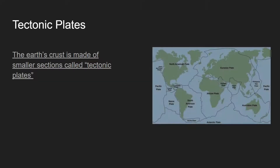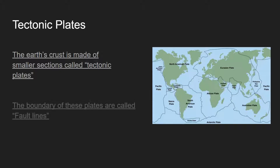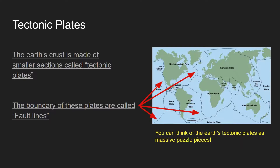Here are the major tectonic plates — there are actually smaller tectonic plates inside each of these, but these are the major ones. These black lines are called fault lines, which we looked at last week. Any border between two tectonic plates is called a fault line. I'd like you to think of the Earth's tectonic plates as massive puzzle pieces — the entire Earth's crust is just a large collection of large and small puzzle pieces called tectonic plates.